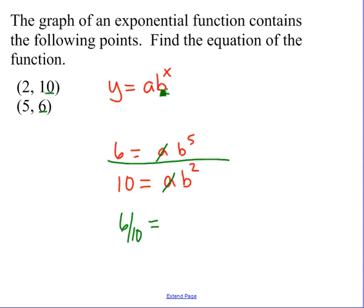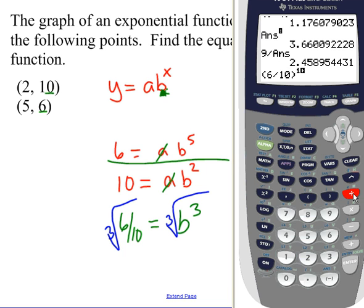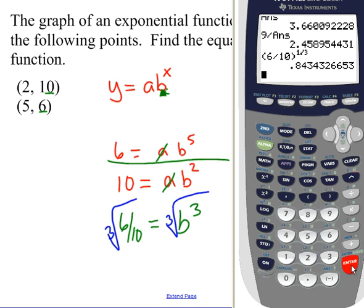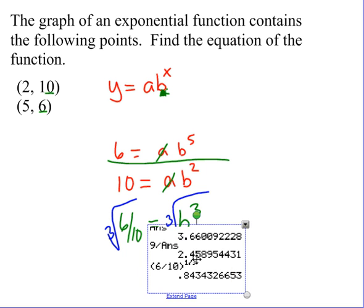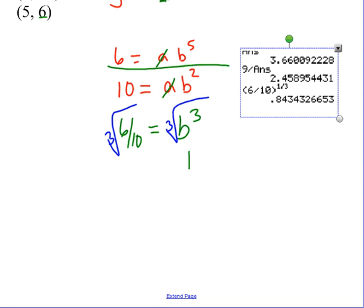The a's are going to cancel off, and we have 6 tenths equals b cubed. Got to get rid of the cube, so I take the cubed root of it. Go to my calculator. Do 6 tenths. And I'm just going to raise it to the 1 third. And I get b to be that value, 0.843.